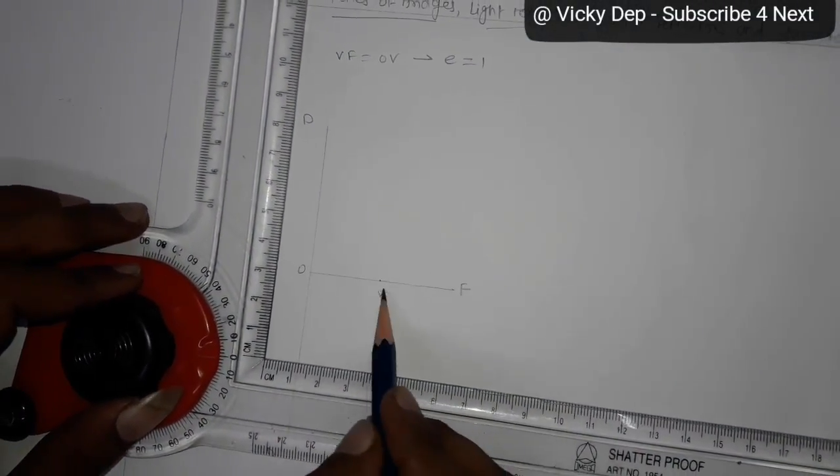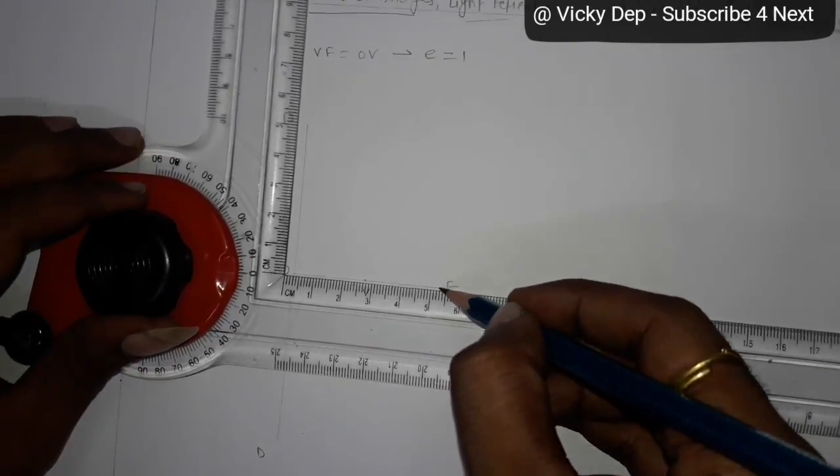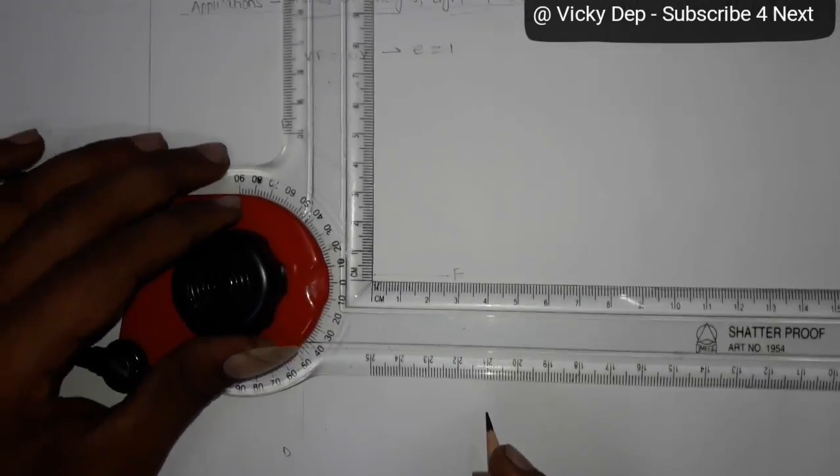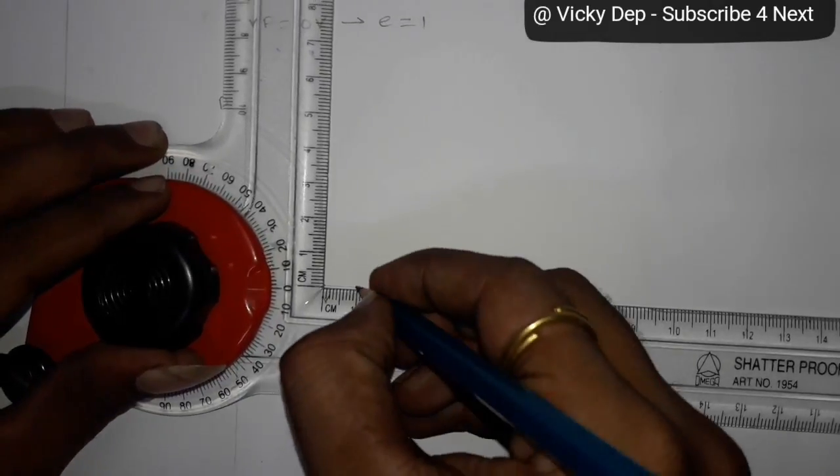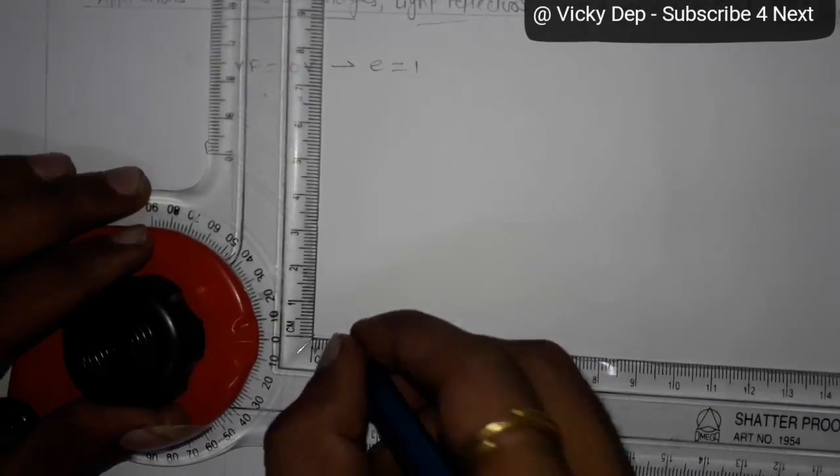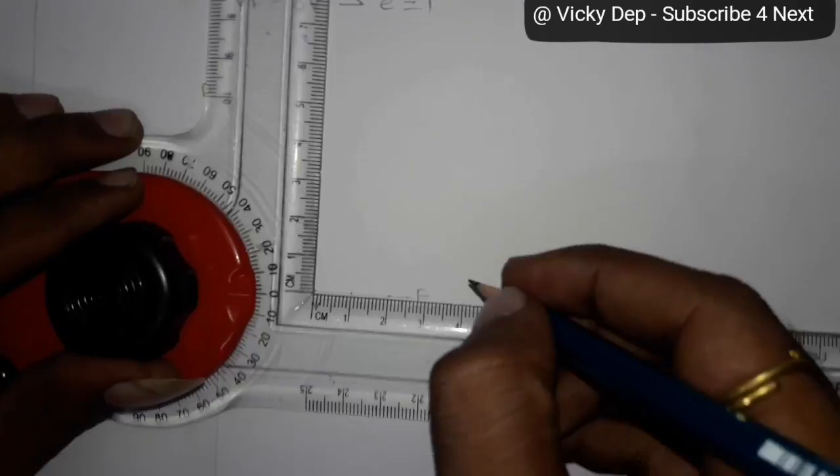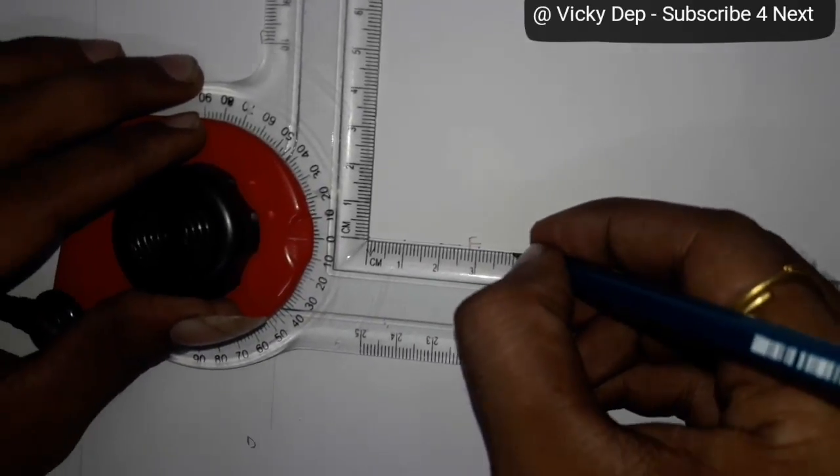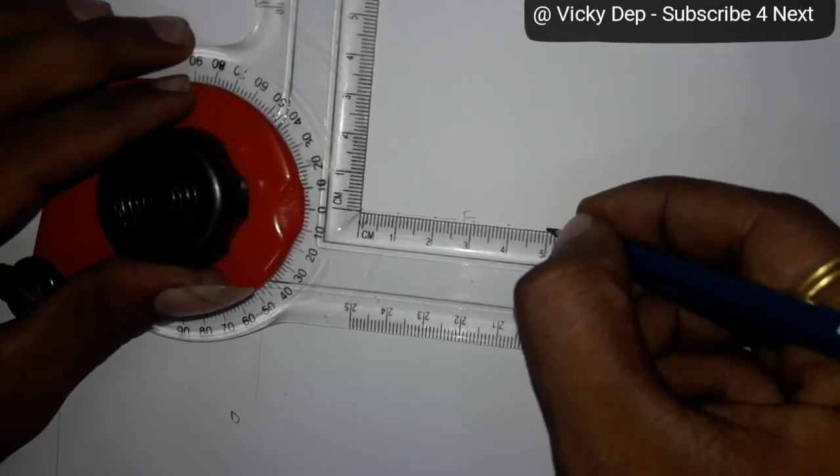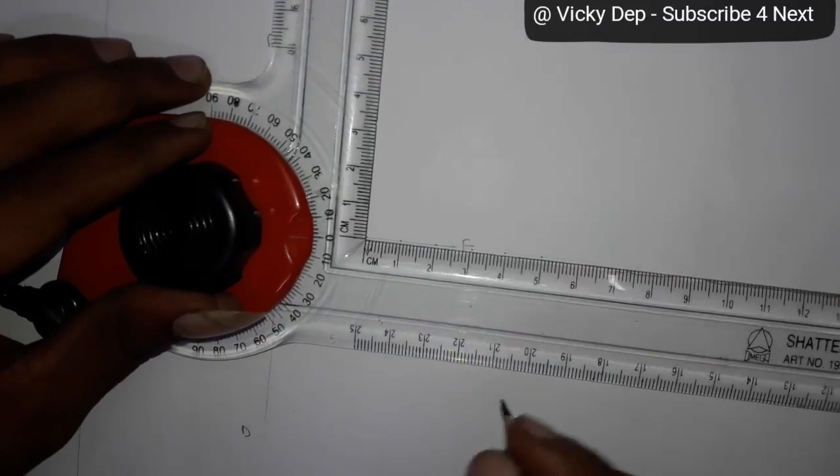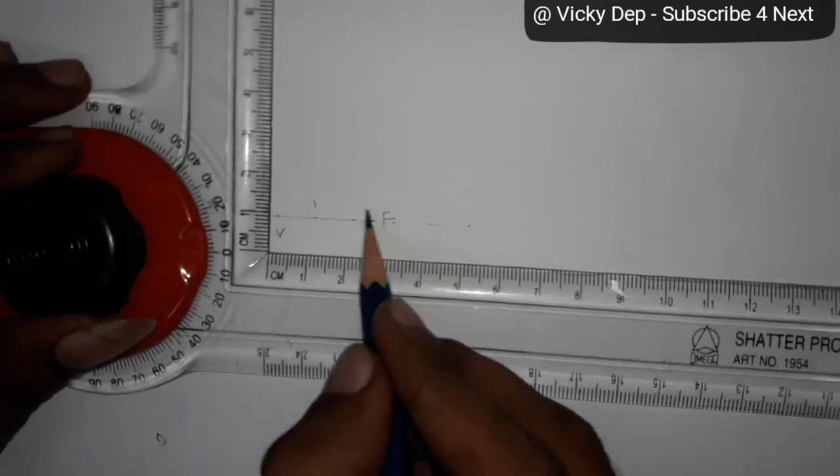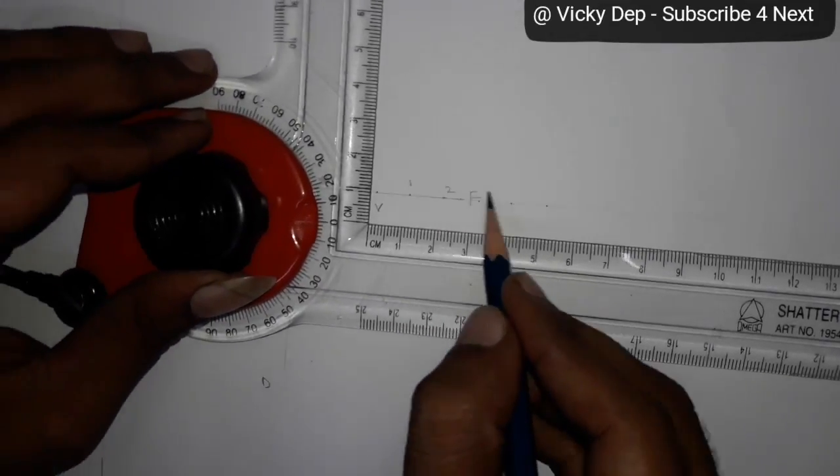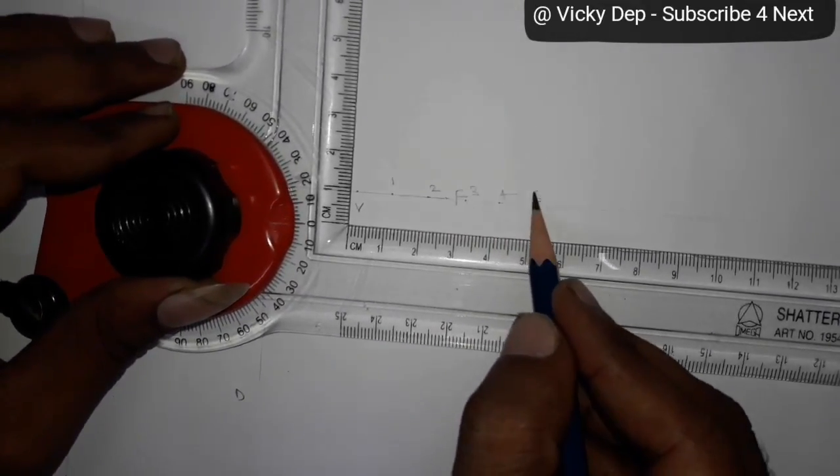Now we have to, from this line, you can extend it. We have to divide from point V in equal parts. Take any, you can take any parts, like 4, 5, whatever. I am taking at 1 cm apart, 5 points. 1, 2, 3, 4, 5. Give some name, 1, this is 2, 3, 4, 5.